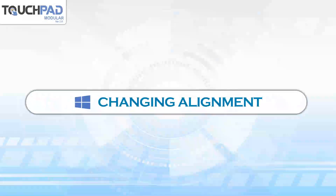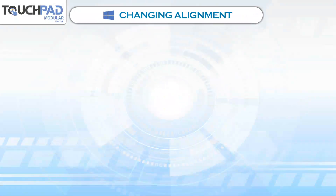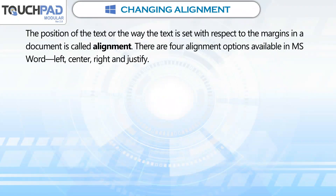Changing Alignment. The position of the text, or the way the text is set with respect to the margins in a document, is called alignment. There are four alignment options available in MS Word: Left, Center, Right, and Justify.